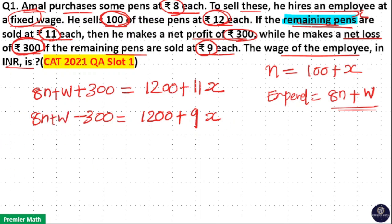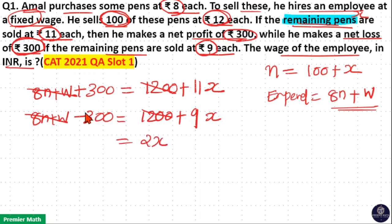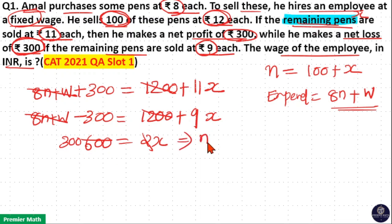Now we have two equations. If I subtract the second equation from the first, then 8N plus W cancels, and 1200 cancels. 11X minus 9X equals 2X, and 300 minus minus 300 is plus 600. So 2X equals 600, meaning X is equal to 300. Remaining pens are 300, so total number of pens N equals 100 plus X, that is 400 pens.